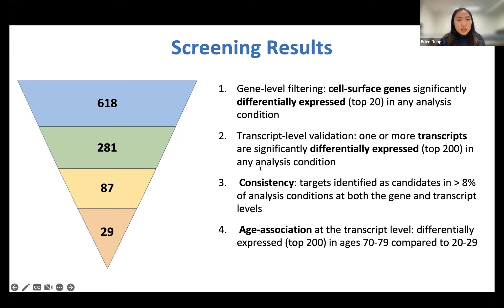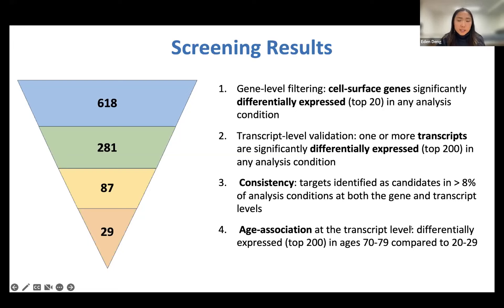Finally, because we're interested in cellular senescence specifically in the context of human aging, we wanted to identify targets whose expression is elevated in older compared to younger tissues. We used APTER to identify transcripts highly expressed in older tissue samples from GTEx — ages 70 to 79 relative to tissues ages 20 to 29 — taking the top 200 transcripts from 47 different aged tissues and cell types as our reference for finding age-associated targets. There were 29 final membrane proteins that met all these criteria: top differentially expressed at both gene and transcript levels, consistent across multiple conditions, and associated with aging.